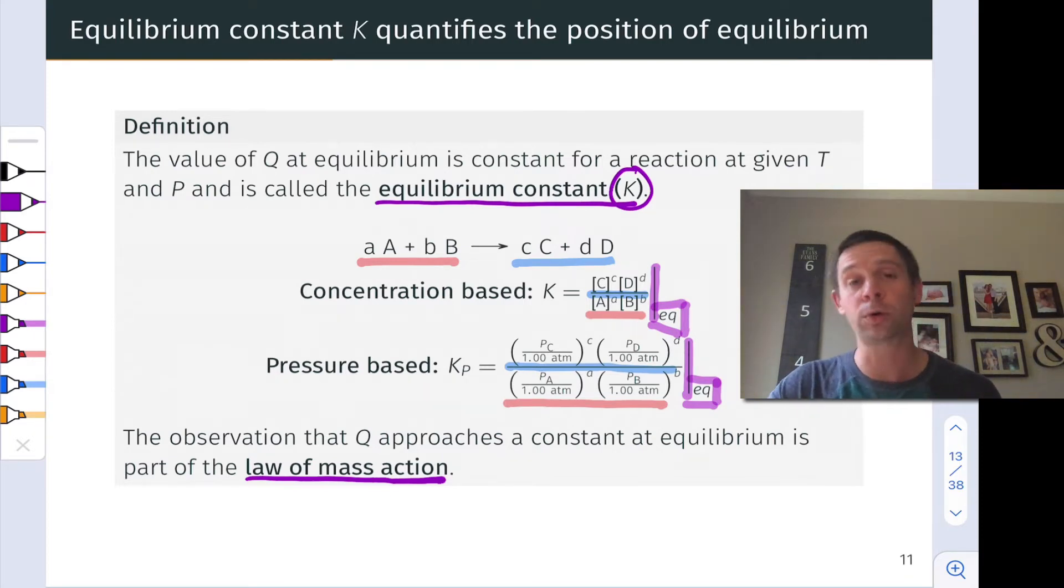We won't go into the origins of the law of mass action. It can actually be derived from first principles using pretty advanced physical chemistry. We're going to kind of take it as gospel and use the law of mass action to derive interesting and useful conclusions about the quantitative situation for chemical systems in equilibrium, particularly in section four of this chapter.